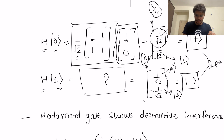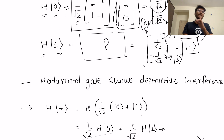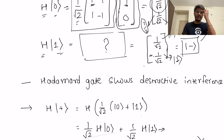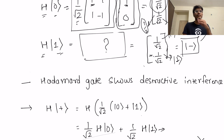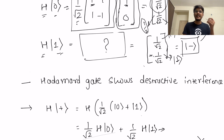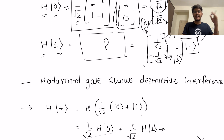As explained in earlier videos, a special property of quantum gates is that they are reversible — from the output state you can still get back the input state, unlike classical gates where you cannot recover input from output. In the case of the Hadamard gate it is especially special: if you apply the Hadamard gate on a particular state you get some output state, and if you apply the Hadamard gate again on that output, you get back the original input state — a two-step operation to return from state A back to state A.